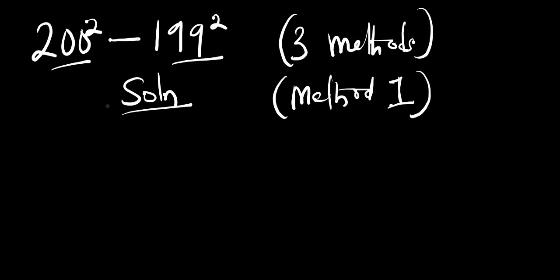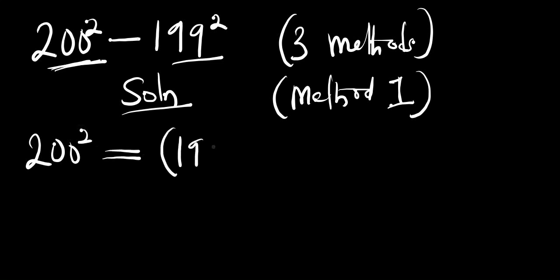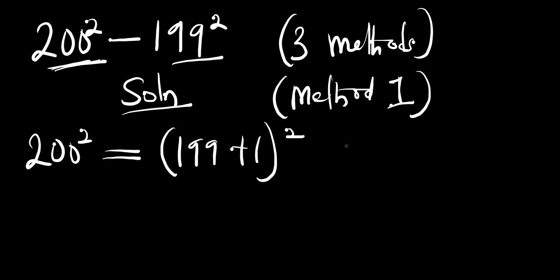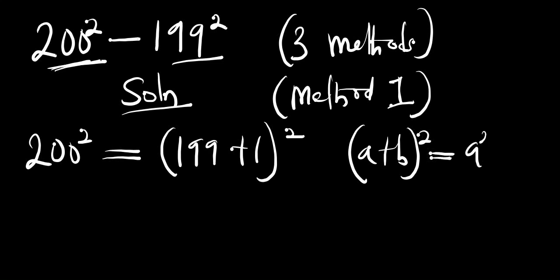In this first method, we are going to rewrite 200 squared. We can write it as (199 + 1) squared, which is the same thing because 199 plus 1 equals 200. Now we consider the identity: if you have (a + b) squared, this equals a squared plus 2ab plus b squared.